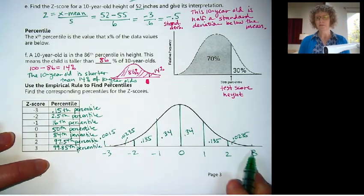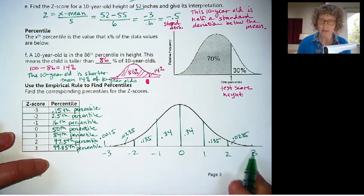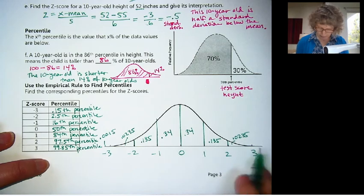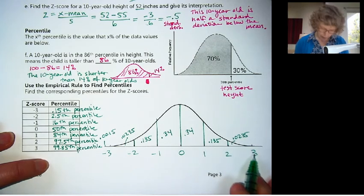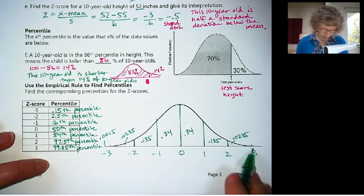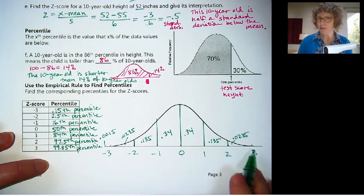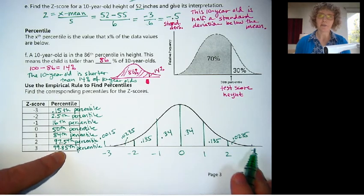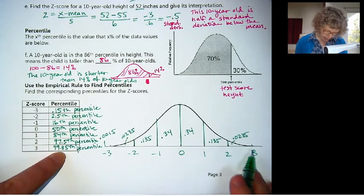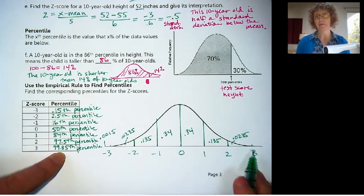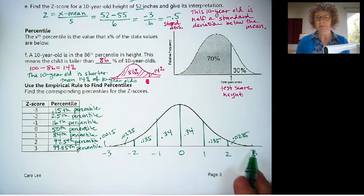Okay, someone who is 3 standard deviations above the mean is very tall, right? That's almost as tall as you can be. Someone, it's very rare. 2 is an outlier. It's very rare to be 3 standard deviations above the mean. You can see the probability is very, very low. And so someone who is 3 standard deviations above the mean is in the 99.85th percentile. So that means they are taller than all these people. They're taller than 99.85% of the people.